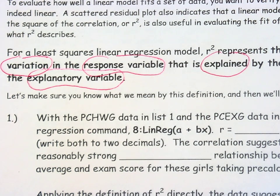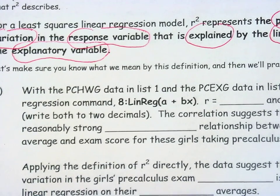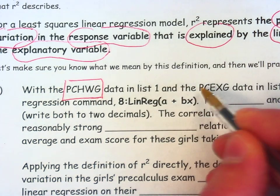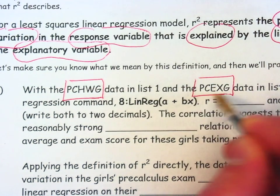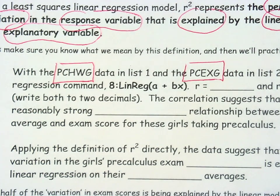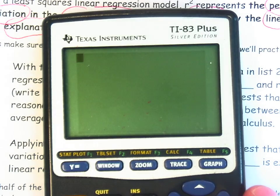First of all, I want to take you through an example of this, then we'll look at how it's actually calculated. The very last part of this study guide is just to practice applying this definition and using these vocabulary. Like our other examples, make sure that your PC homework average for girls is in list one and the PC exam scores for girls needs to be in list two. That's what I have in my calculator.